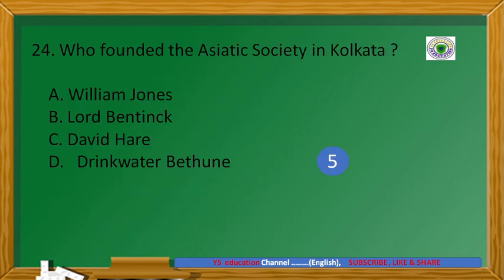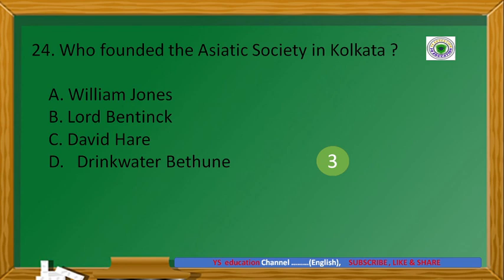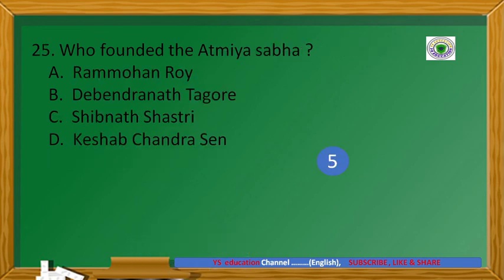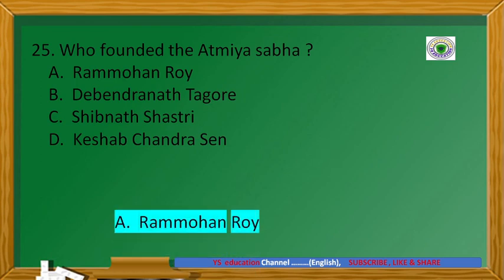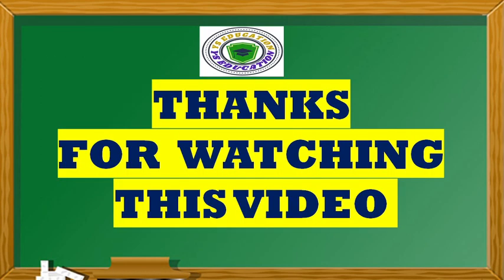Who founded the Asiatic Society in Calcutta? Answer: William Jones. Who founded the Attyasabha? Answer: Ram Mohan Roy. Thanks for watching this video. Please subscribe to our channel and click the bell icon.